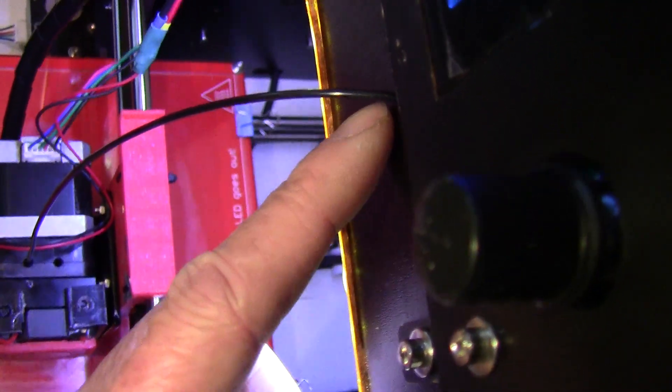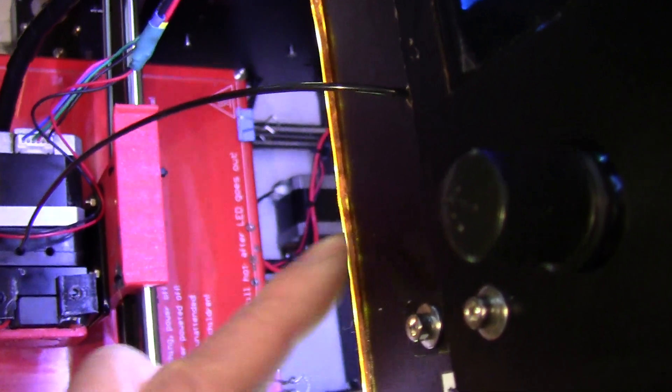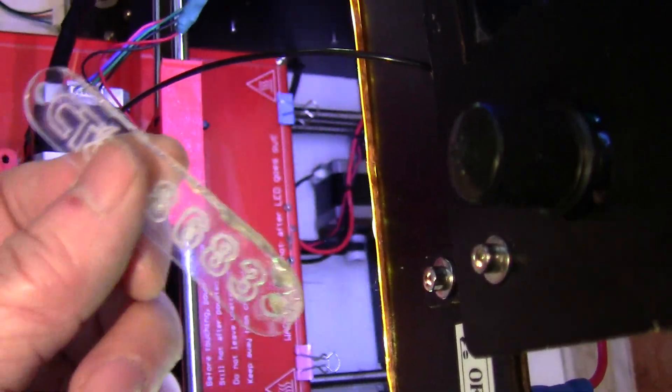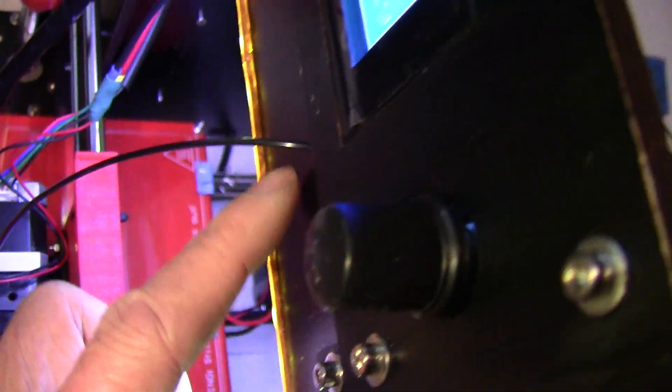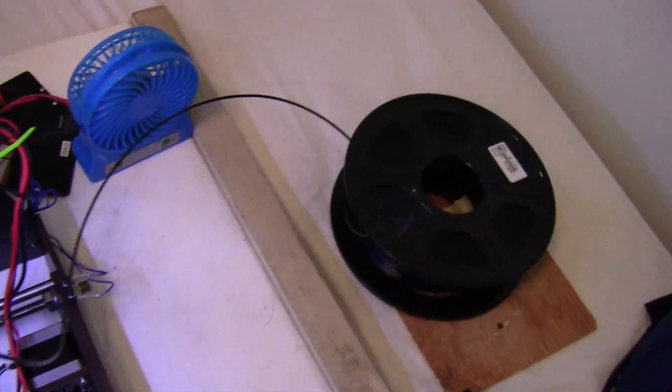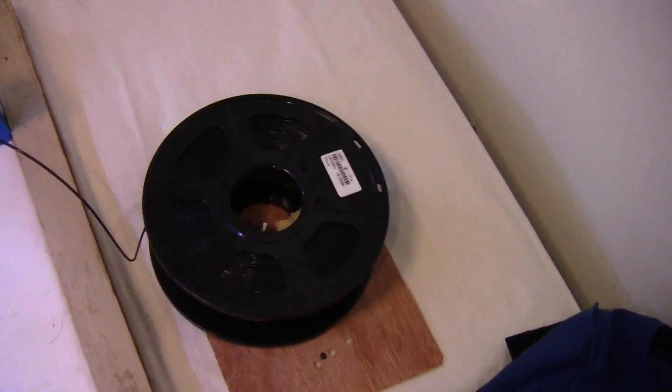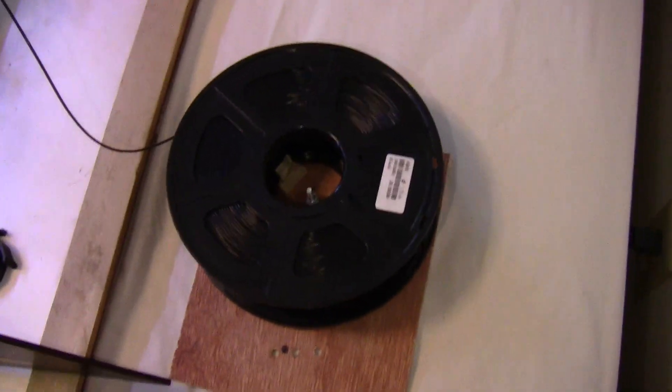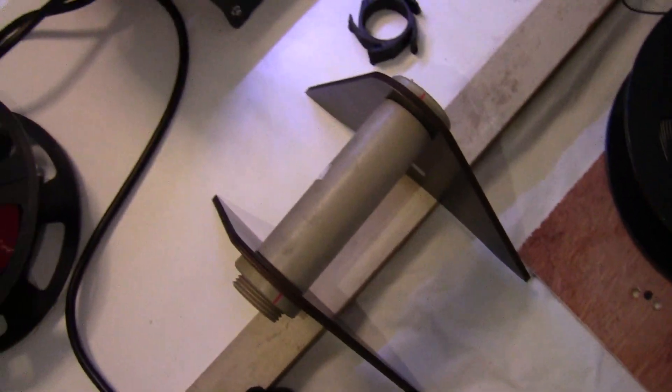Right now I have the filament passing through the hole that was already in here, this is where they have the logo, so I just passed the filament there and I lay the filament reel down instead of standing up like this, and it seems to work better.